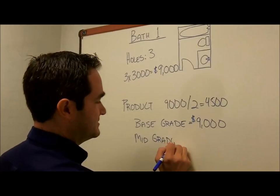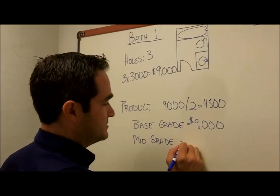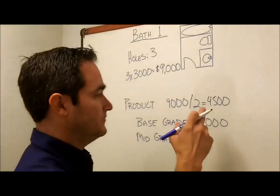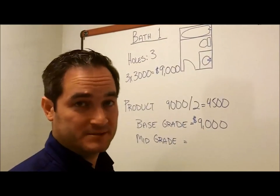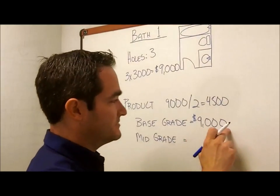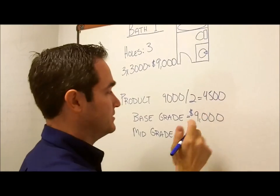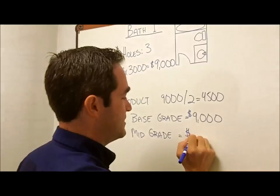So if we go to a mid grade fixture, that's going to give us a lot more choices. It's still not crazy by any means—you still have a lot more you could spend if you wanted to—but you have a lot more options than you would at base grade. And again, we want to take this base grade number and add another $4,500 to it.